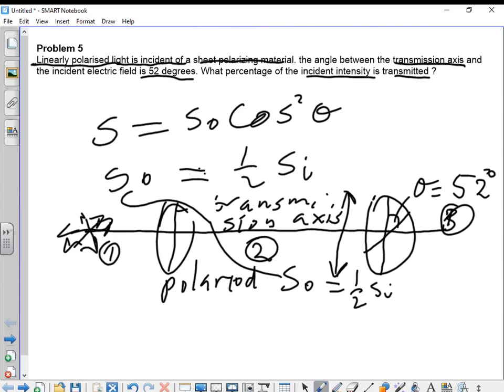From Malus's law, we have that the intensity over S₀ equals cos squared theta. Here, S₀ over S_i is the intensity in region 3 divided by the intensity in region 2.